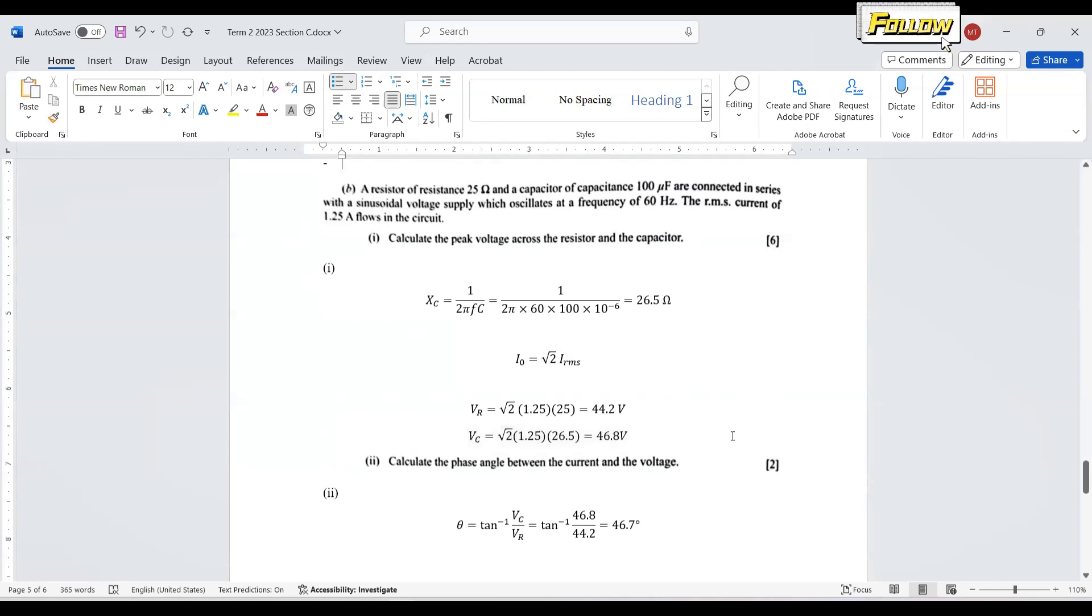So six marks is quite generous. Let us move on to the next one. Calculate the phase angle between the current and the voltage. As we have learned, the angle is tangent, inverse tangent of Vc over Vr, or we also can use reactance over the resistance. The final answer is 46.7 degrees.